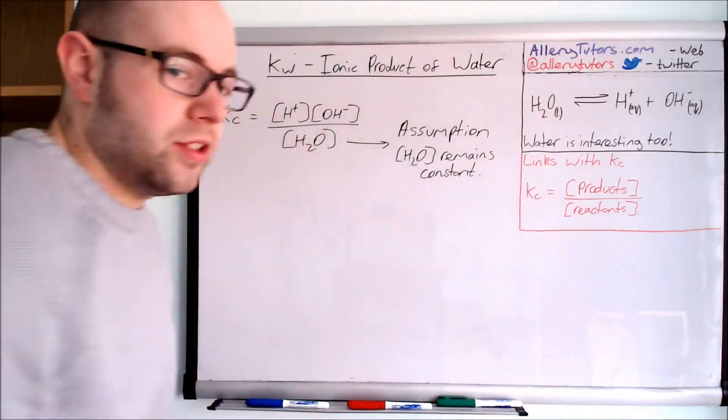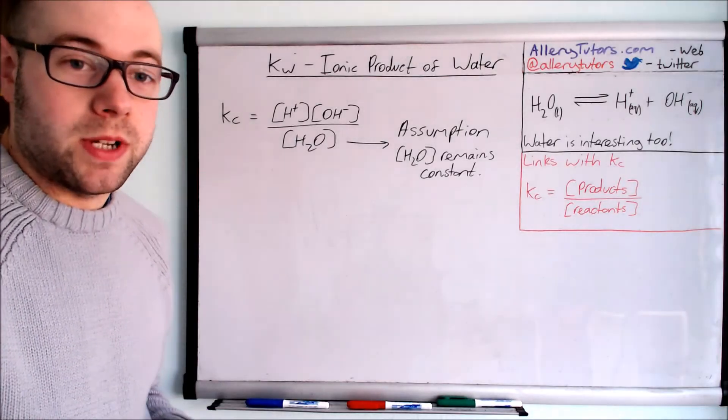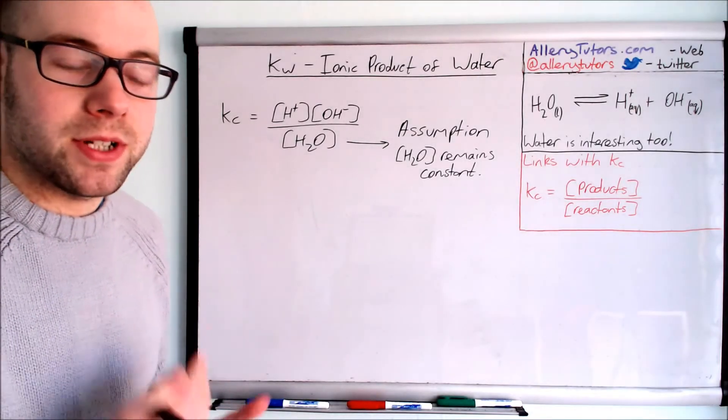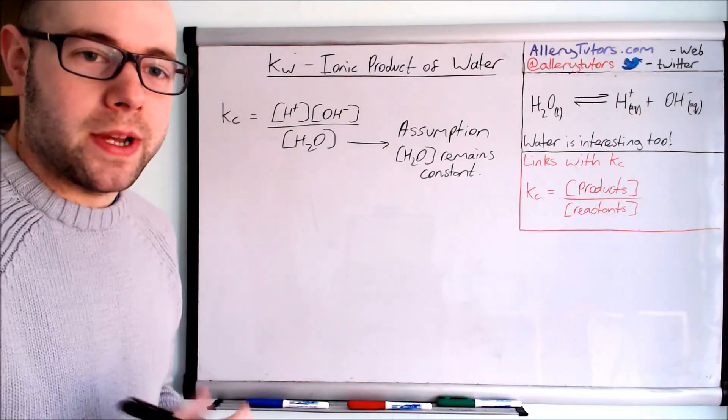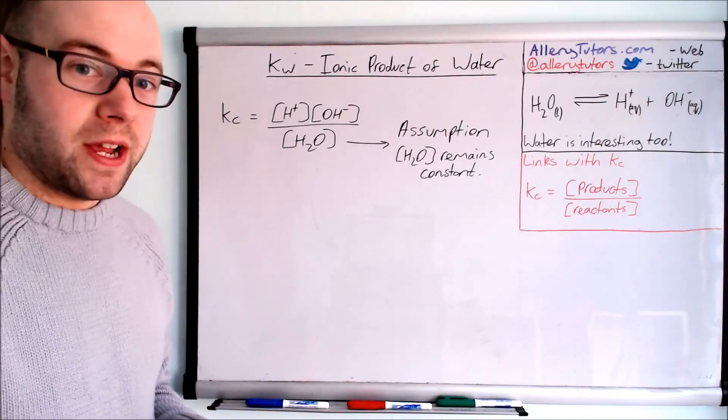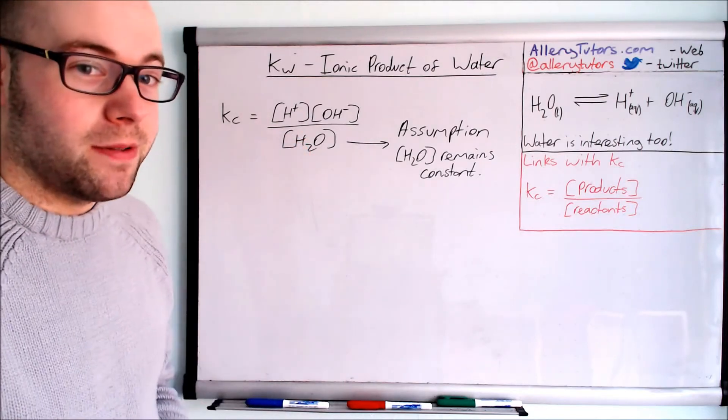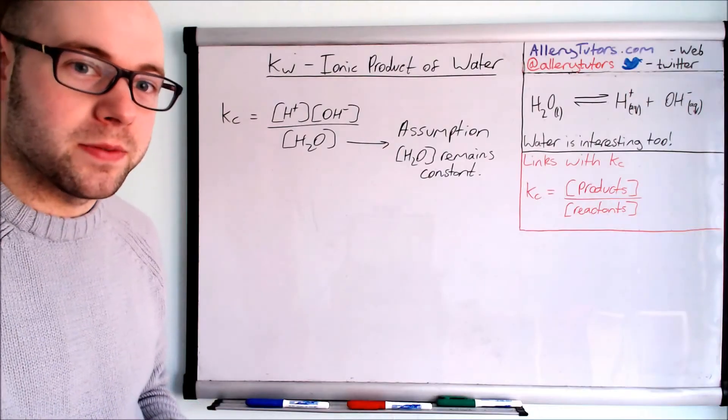This allows us to get rid of it from the expression so we can focus on the bits that matter, which is the H plus and OH minus. One way we can do that is to multiply the right hand side by H2O, and so we've got to multiply the left hand side by H2O as well.